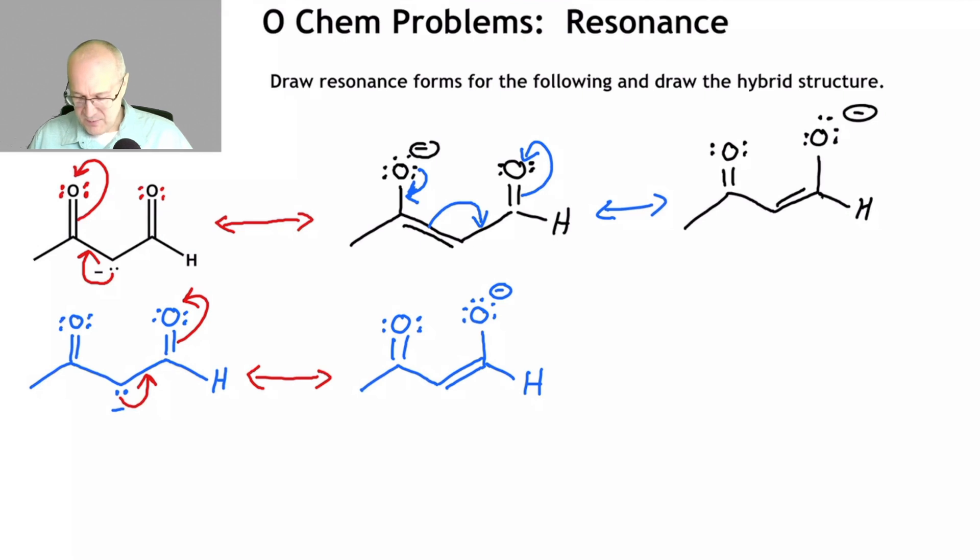Okay, now the hybrid structure of this molecule would be something like this. Delta negative, delta negative, and delta negative. These are big delta negatives. This is a small delta negative. And that's how you do the resonance forms for this particular ion.